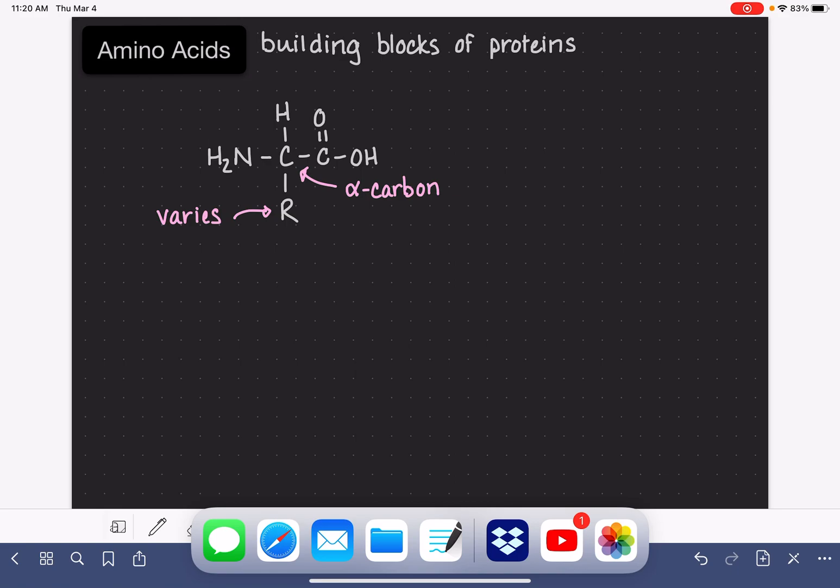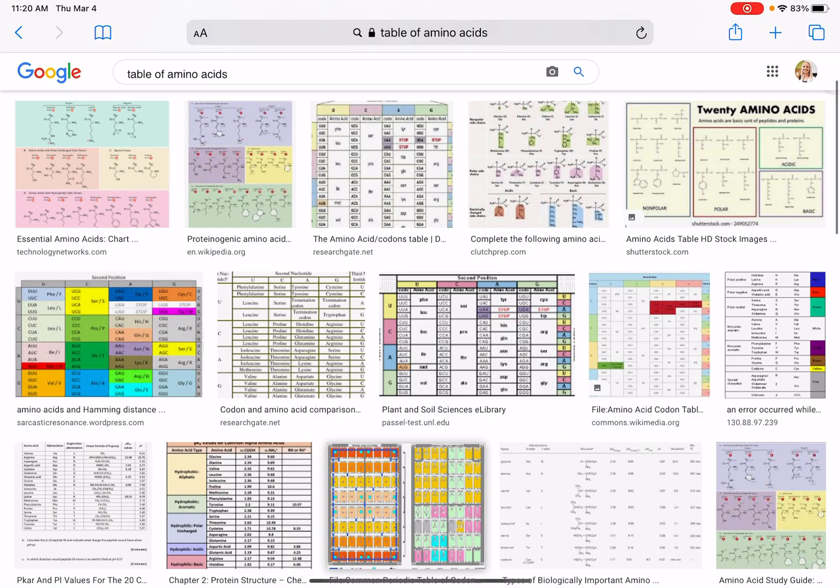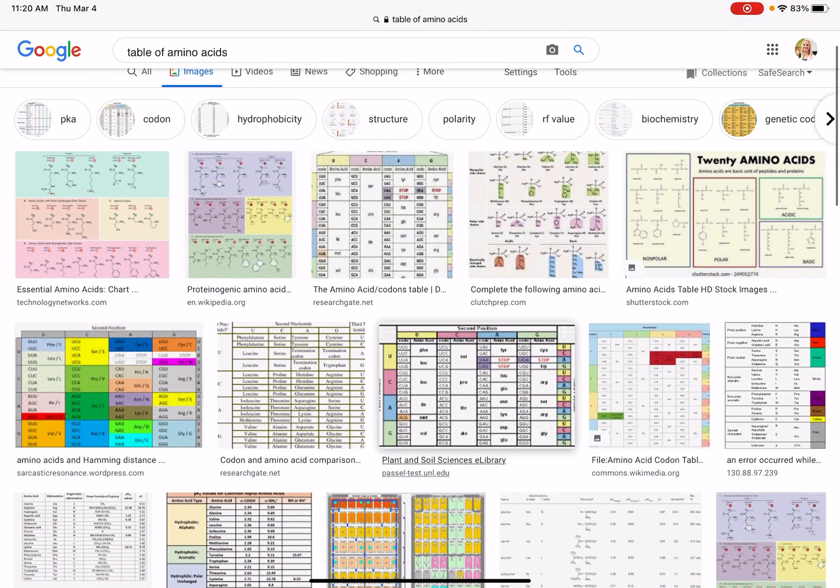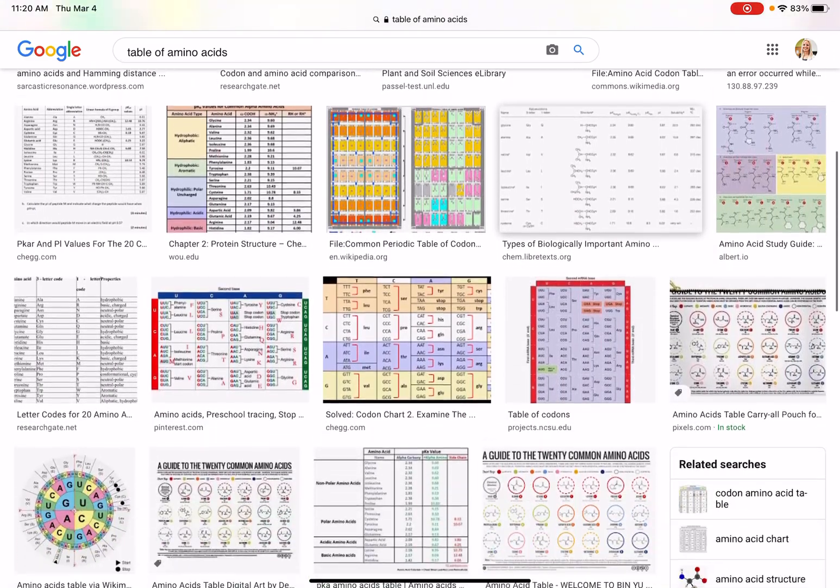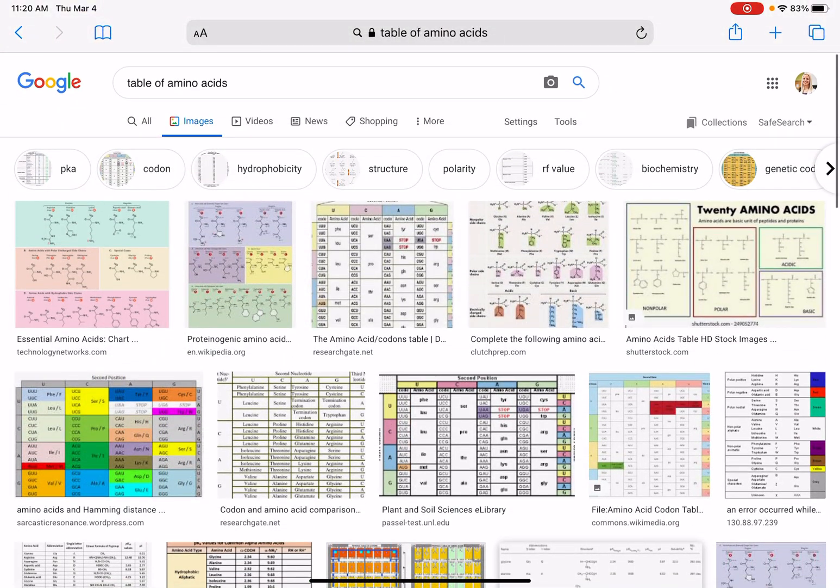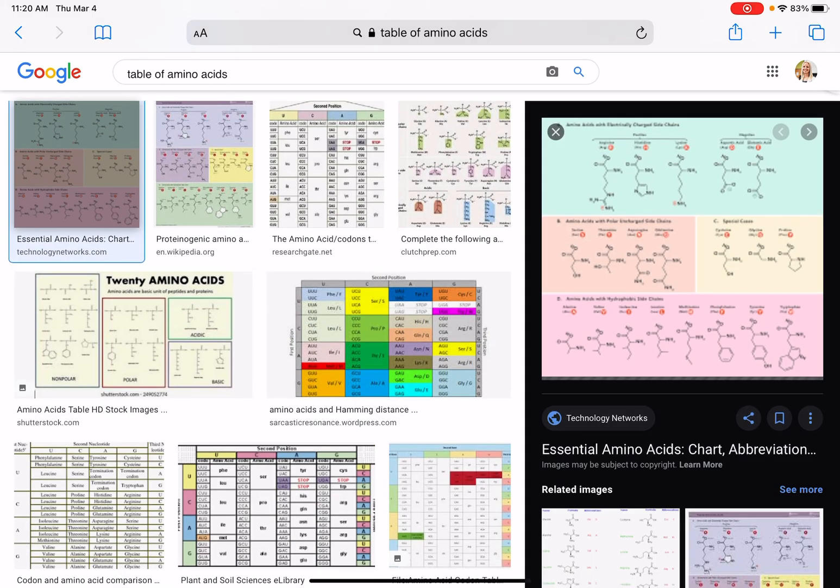You've probably got a good table of amino acids in your textbook. There are also a lot of really good ones online. So I just googled table of amino acids and you can see that there's a whole bunch of them that have popped up. A lot of different ones. And you can choose one that just looks visually appealing to you.